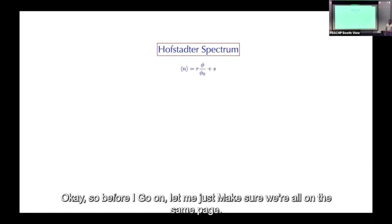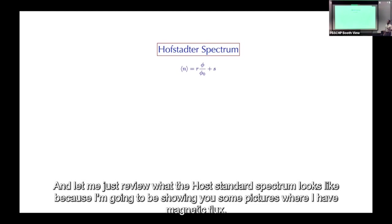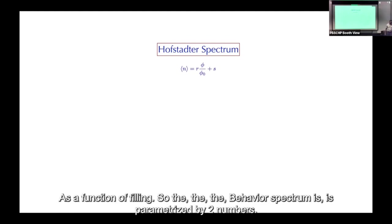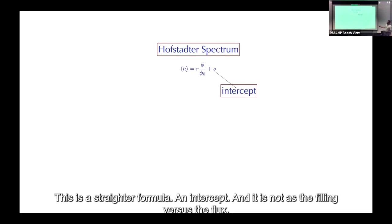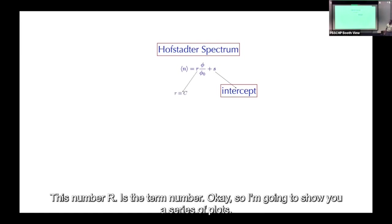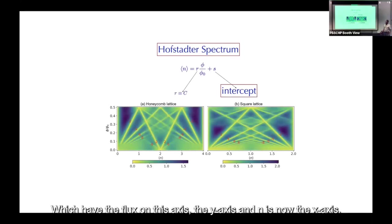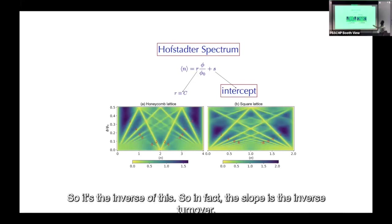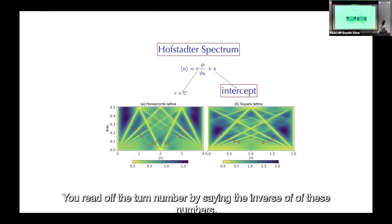Before going on, let me review the Hofstadter spectrum, since I'll be showing plots with magnetic flux as a function of filling. The Hofstadter spectrum is parametrized by the Streda formula: filling ν versus flux φ, where the slope is the Chern number. I'll show plots with flux on the y-axis and filling ν on the x-axis, so the slope is the inverse Chern number.